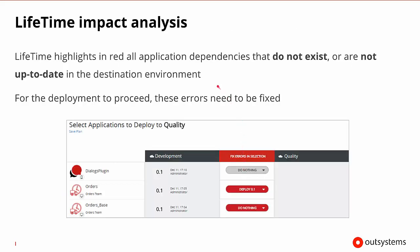To do all of this, Lifetime does an impact analysis. It looks for any application dependencies that do not exist or are not up to date in the destination environment. In this case, not up to date means not at the right version number. For the deployment to proceed, all of these errors would need to be fixed.